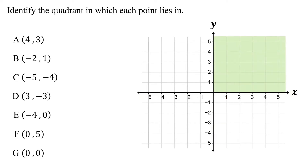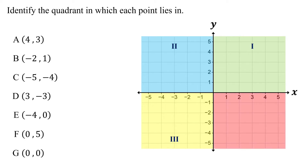The top right region is quadrant one. The top left region is quadrant two. The bottom left region is quadrant three. The bottom right region is quadrant four.